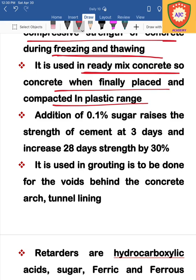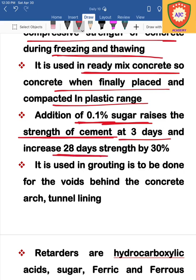In retarders, sugar is a well-known retarder at 0.1% of the cement content. In 3 days, there is strength in cement or concrete. In 28 days, there is strength, and with sugar at about 0.1%, there can be around 30% change in strength.